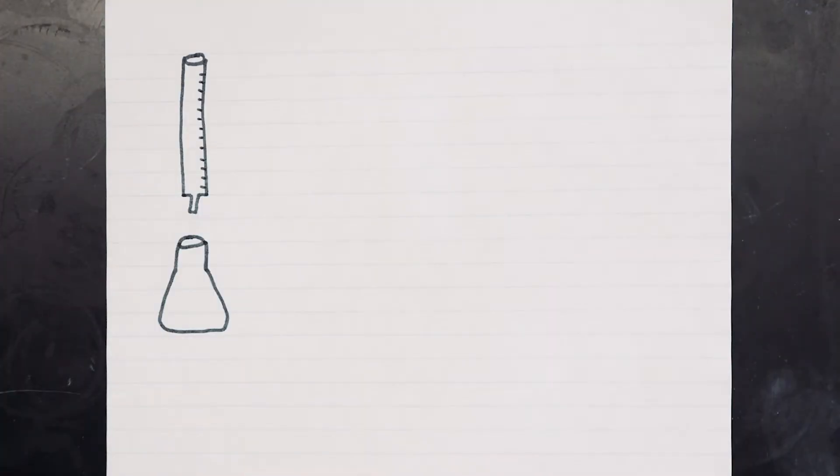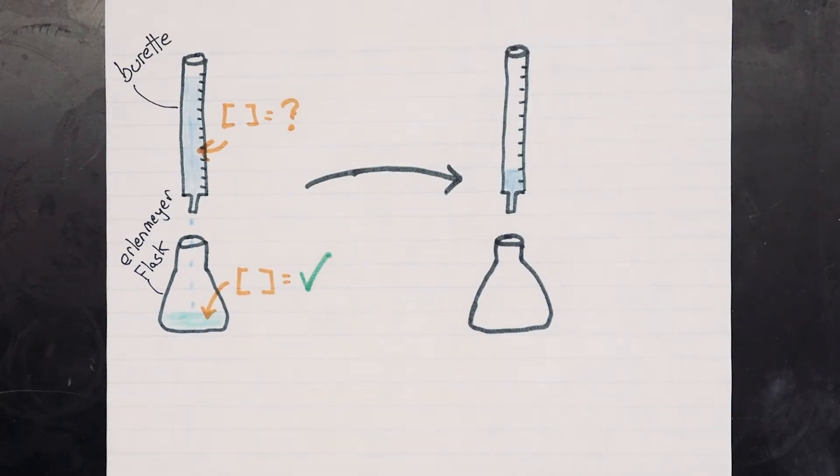A titration is a way to measure the concentration of an unknown sample using the known concentration of a standard. In today's titration we fill a burette with a solution whose concentration isn't known, then add it slowly to a solution that will react with it whose concentration is known. After some time the reaction will finish, which is often obvious due to a color change, and we'll know exactly how much of the unknown solution was added because the burette is graduated accurately along the side.